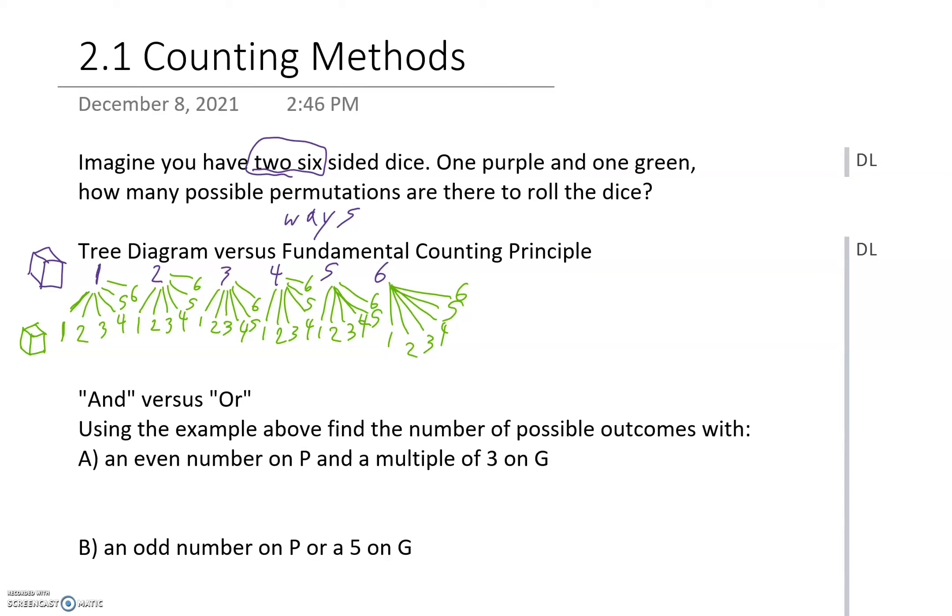So how many possible options are there? Well, if we count them up, so if we circle one, two, three, four, five, six, seven, eight... all the way through counting each endpoint... thirty-five, thirty-six options. Okay, we count it up to 36.